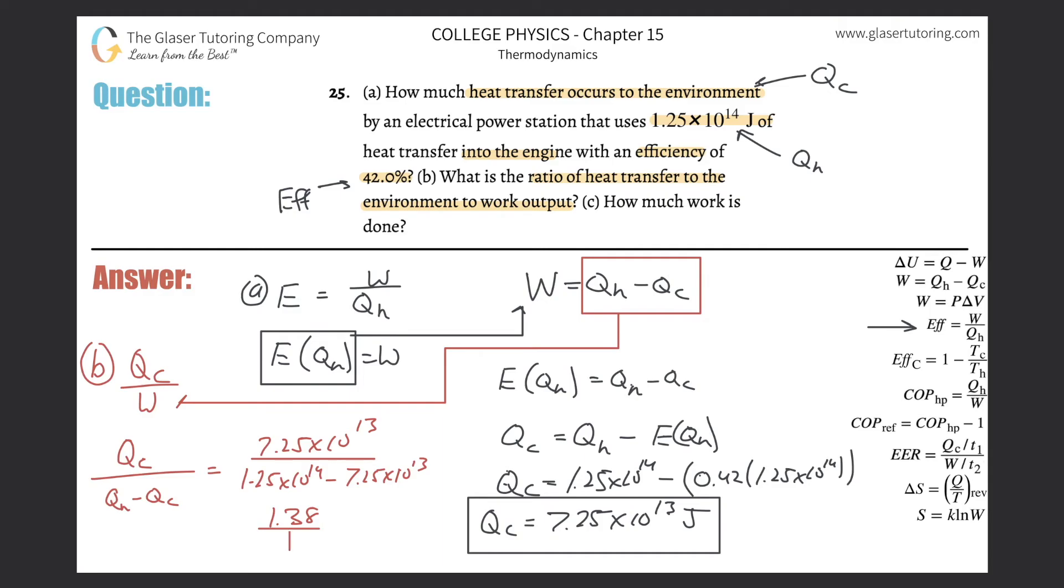So 1.38 to 1: basically for every single joule of useful work that is being output, 1.38 joules of heat is being transferred into the environment. Last but not least, letter c: how much work is done?